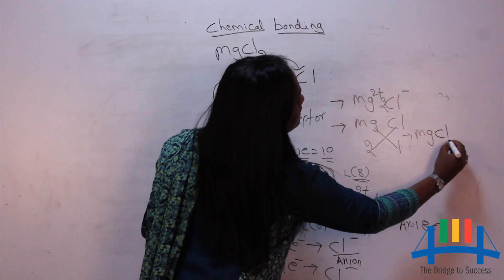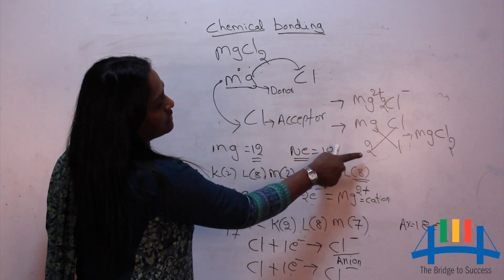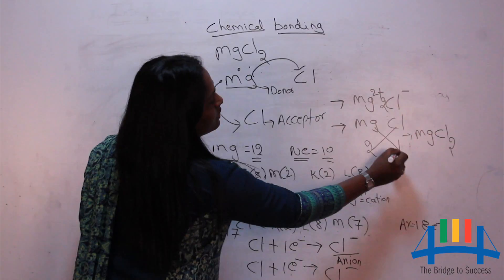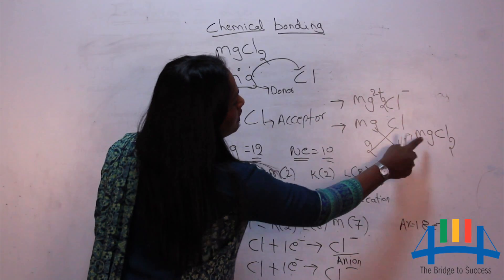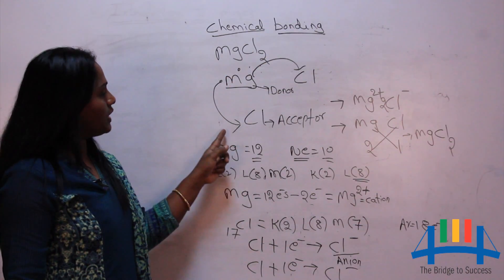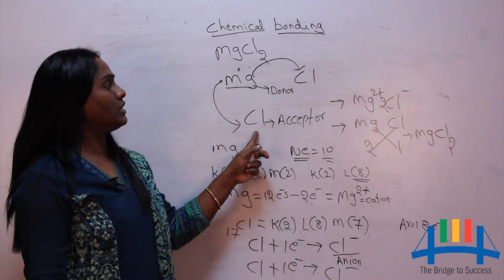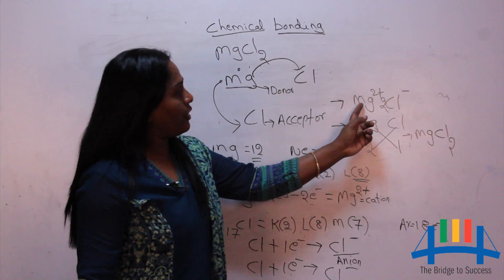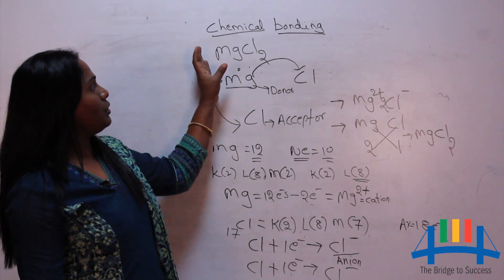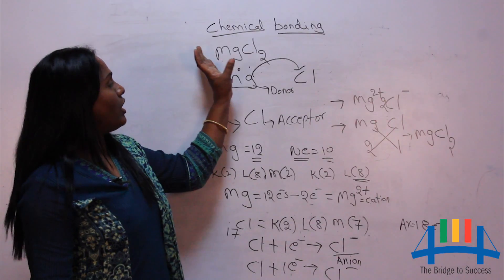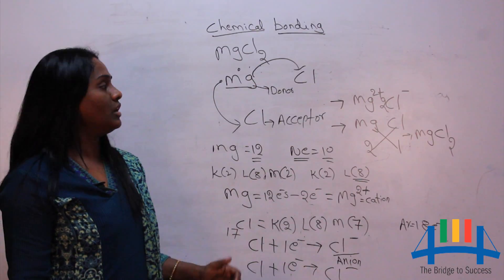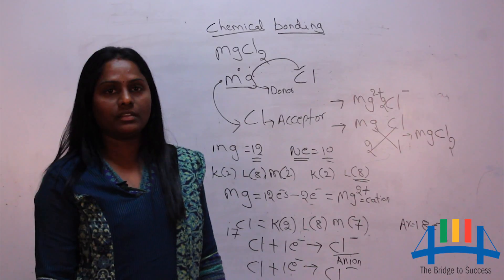So MgCl₂ is formed by donating and accepting electrons. In this molecule, ions are involved — cation (Mg²⁺) and anion (Cl⁻) — that's why we call it an ionic bond. The bond formed between these two is an ionic bond. Thank you.